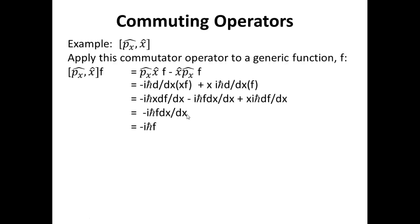And so the value of the p̂x x̂ commutator operator on f is equal to minus iℏf. Now we really only care if the commutator operator either has a value of zero or non-zero. And so the fact this is equal to minus iℏ times f, that's not significant. What's significant is that it's not equal to zero. And so this tells us then that p̂x and x̂ do not commute.